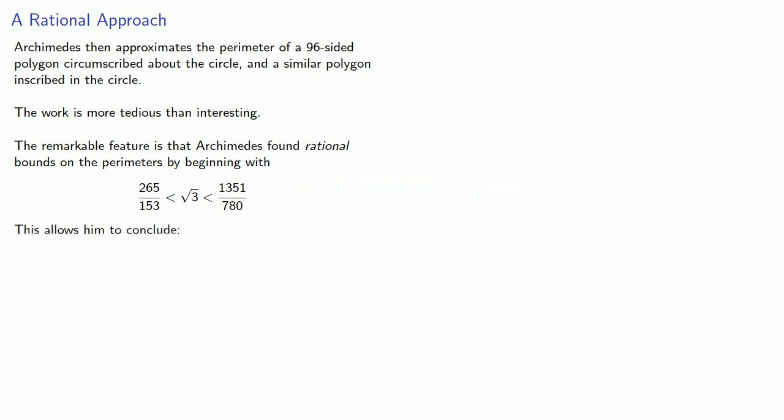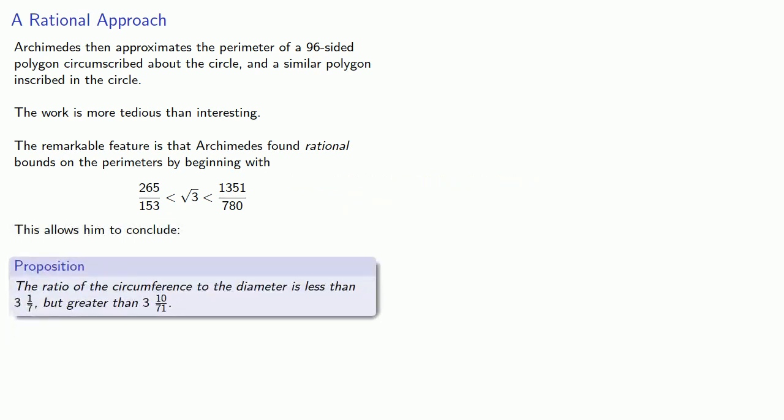At the end of it, Archimedes concludes that the ratio of the circumference to the diameter is less than 3 1/7 but greater than 3 10/71. And you'll notice that this upper bound gives us our approximation 22/7.